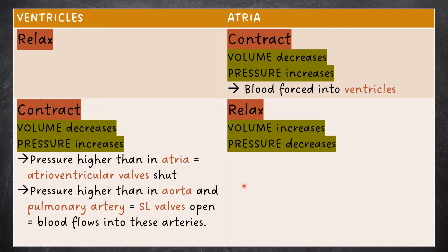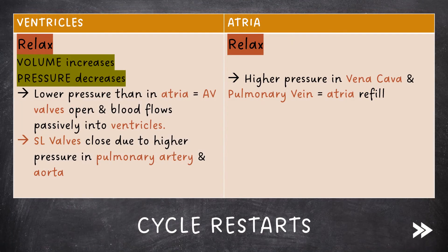The volume of the atria increases and the pressure decreases. Finally, both the ventricles and the atria relax. The volume of the ventricles increases and the pressure decreases. Due to lower pressure in the ventricles than in the atria, the atrioventricular valves open and blood flows passively into the ventricles. The semilunar valves close due to higher pressure in the pulmonary artery and aorta. The atria refill due to higher pressure in the vena cava and pulmonary vein.